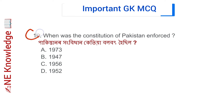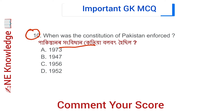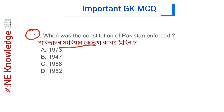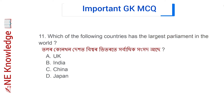Question number 10: When was the constitution of Pakistan enforced? Options: 1973, 1947, 1956, and 1952. Try to answer yourself before checking. Correct answer: Option C — 1956. The constitution of Pakistan was enforced in 1956.